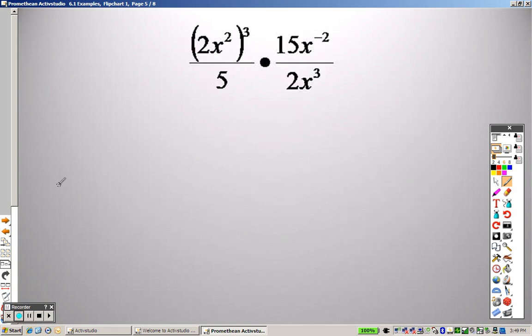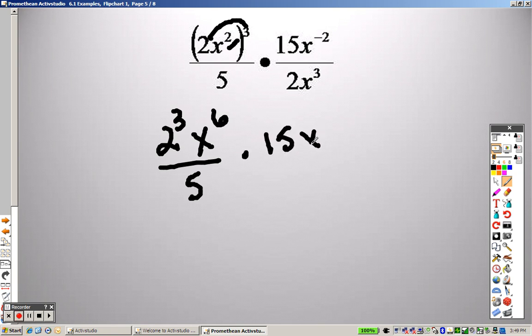Okay, let's take a look at another. Now because of parentheses, we have to do those first. So I take that through. So that's 2 cubed. And that is, because of parentheses, that is x to the 6th over 5 times 15x to the negative 2 over 2x cubed.